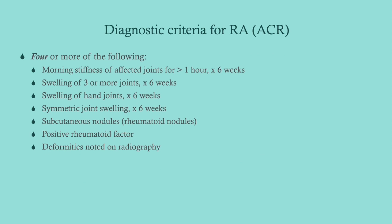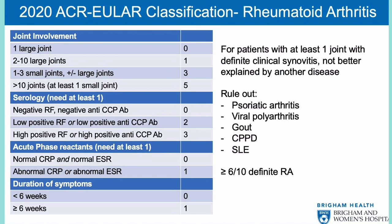The American College of Rheumatology diagnostic criteria require four or more findings; it functions as a scoring system — the more points, the more likely RA is the diagnosis. You don't need to memorize it exactly, just have a general idea of what we're looking for. This is why we get the rheumatoid factor, the anti-CCP, and either CRP or ESR. The criteria also require ruling out other causes, which can generally be done clinically.